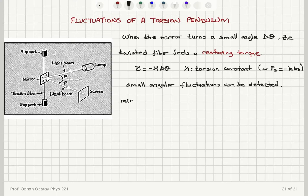So why would we have small angular fluctuations in the mirror? Air molecule random collisions, that is one reason why this is going to happen.